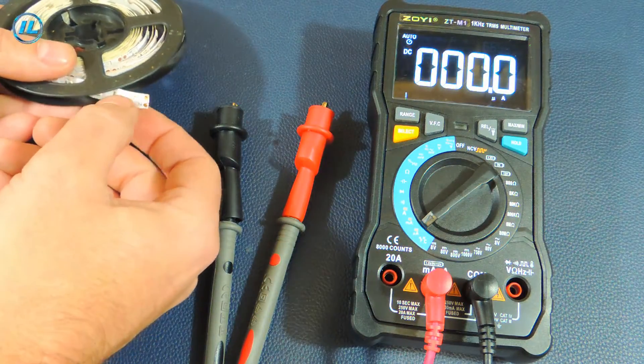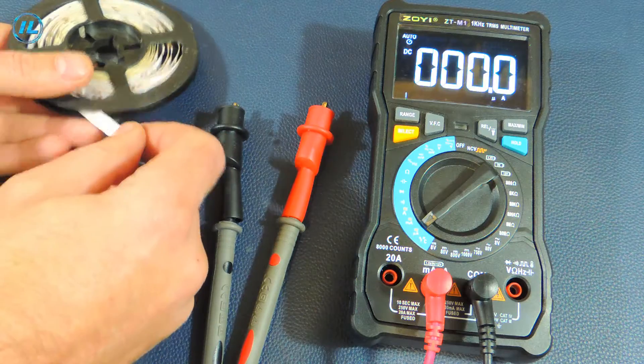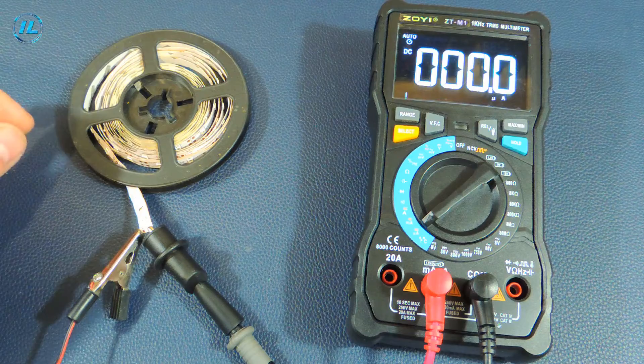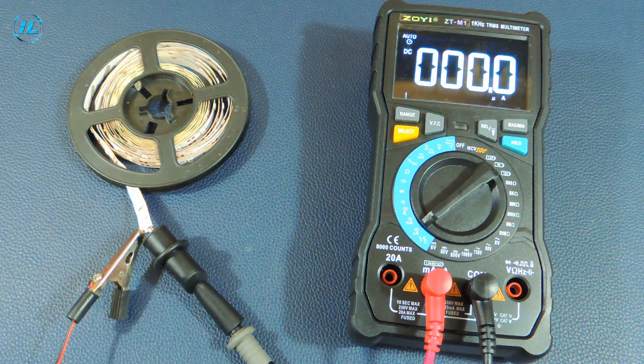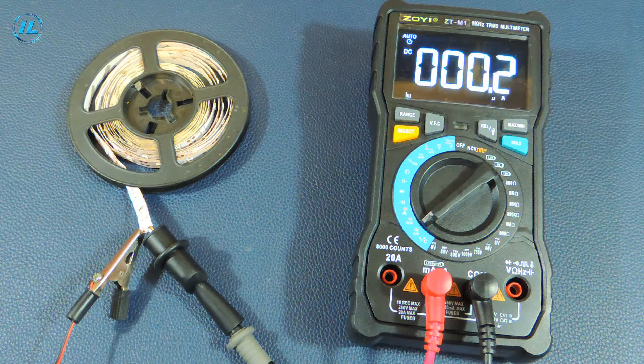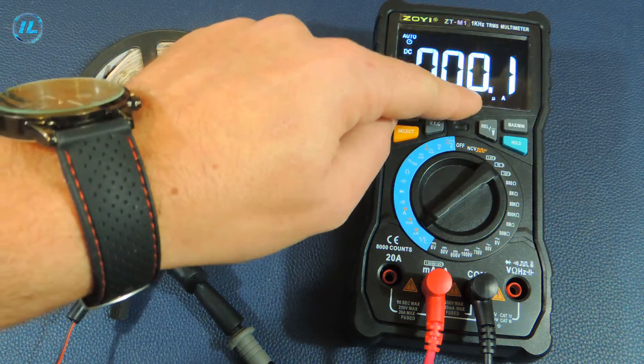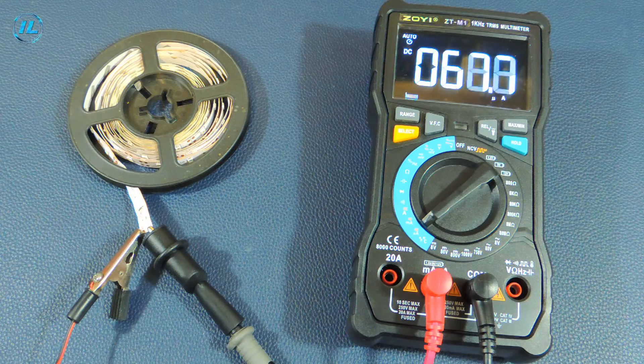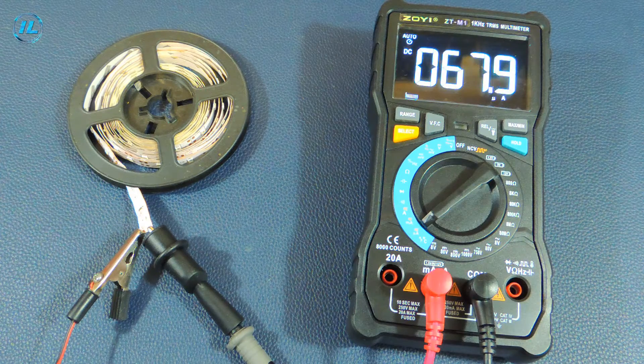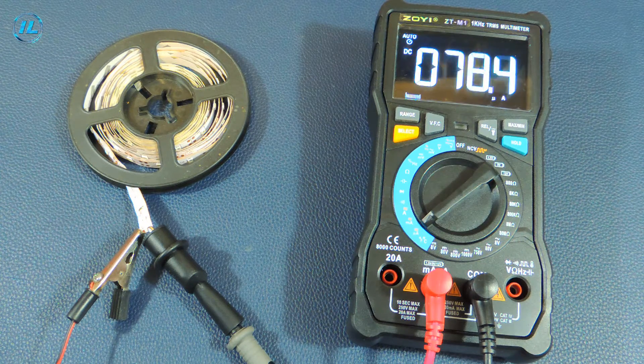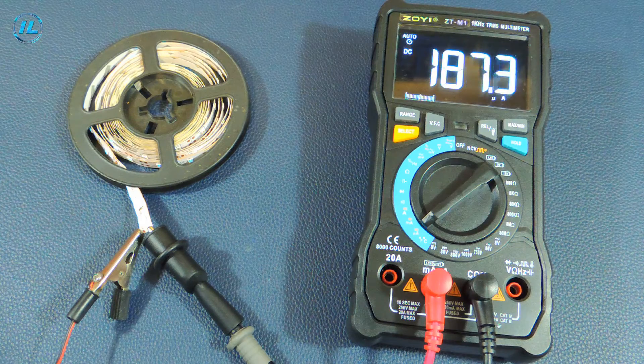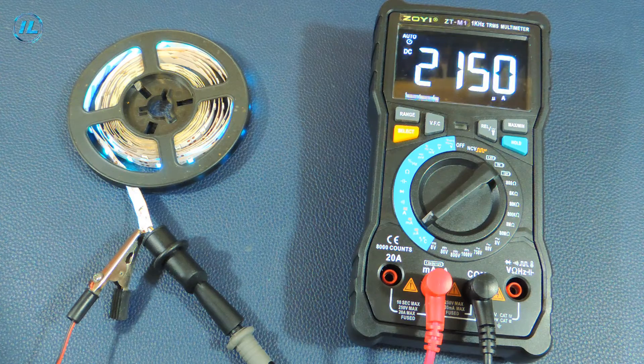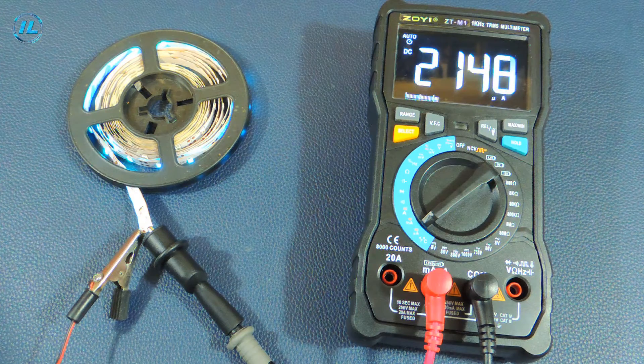Now I'm measuring what current this LED strip consumes. I have connected this LED strip to the power supply and now I will gradually increase the current. The current strength is 0.1 micro ampere. Approximately 68 micro amps. 186.